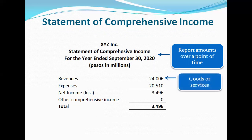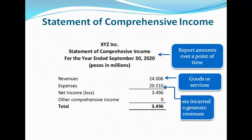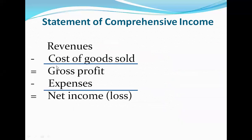Revenues represent goods or services sold. Expenses are the costs incurred to generate revenues. Manufacturing and merchandising companies typically include an additional expense account called cost of goods sold, or cost of sales. In the statement of comprehensive income, following revenues, it is also common to report a subtotal called gross profit — or gross margin — which is revenues less cost of goods sold. The company's remaining expenses are then reported below the gross profit.